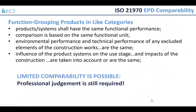The EC3 tool is working to address and facilitate the alignment of EPDs so that users have an easier time evaluating them. One of the key functions of the EC3 tool is grouping products in like categories — comparing materials of similar performance in the same category, so concrete to concrete, steel to steel, not steel to concrete.